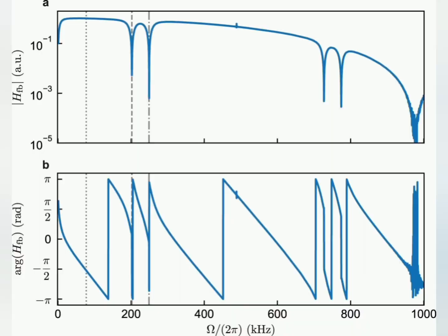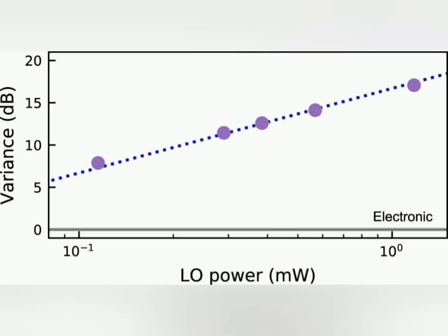To achieve quantum states, movement and energy must be dialed right down. Novotny and his colleagues used a vacuum container cooled down to minus 269 degrees Celsius before using a feedback system to make further adjustments.